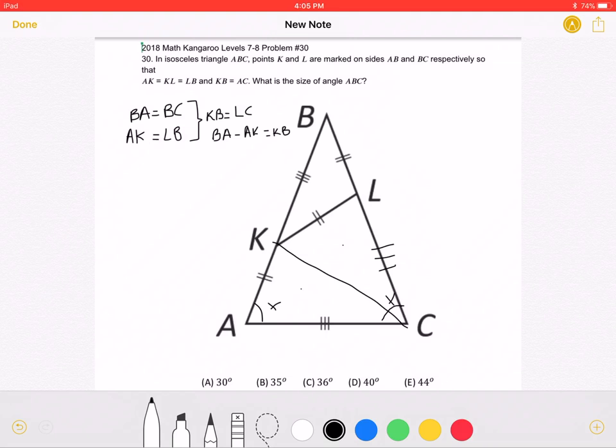Since these two triangles are congruent, this angle must also be equal to X. Here, we can see that this triangle is also isosceles, since two of its sides are equal. This angle must be equal to this angle.